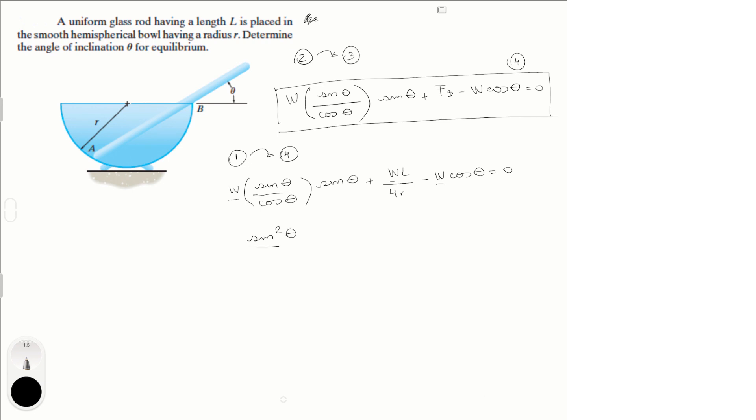And you will get sine squared theta over cosine of theta minus the cosine of theta plus L over 4R is equal to 0.